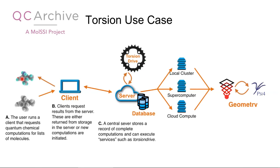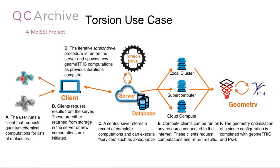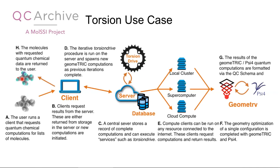This can go out to local clusters, supercomputers, AWS — we hook into everything, because these computations are effectively embarrassingly parallel. The compute clusters spin up geomeTRIC and Psi4 to actually execute geometry optimization. Results go through a serialization process back to the server. TorsionDrive is then asked if the result is complete or if we need more. Once iterations finish, torsion drive shuts down and the next time the user queries the server, they get the entire torsion drive data back.